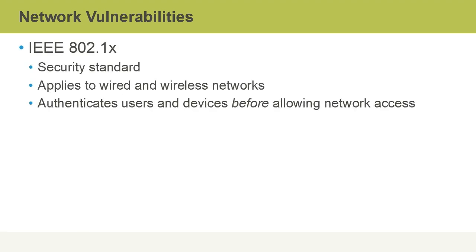IEEE 802.1x plays an important role with network security. It is a security standard that hardware and software can be compliant with, and it applies to both wired and wireless network access. The idea is that users and devices need to be properly authenticated before being allowed on the network — even before DHCP would give an IP configuration to a device. You might wonder how that's possible without an IP address, but it's the connecting device like the network switch or wireless router that forwards the authentication request, so the end device doesn't need a valid IP configuration for this to work.